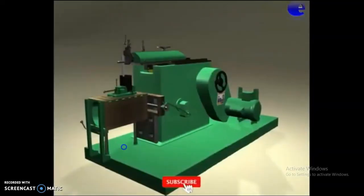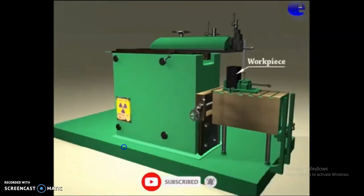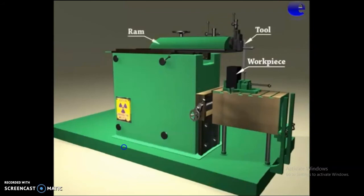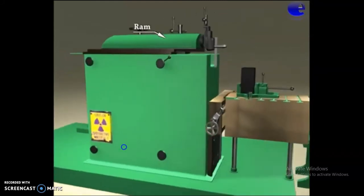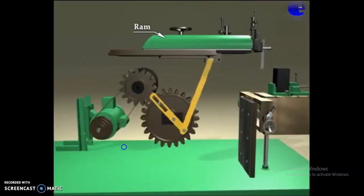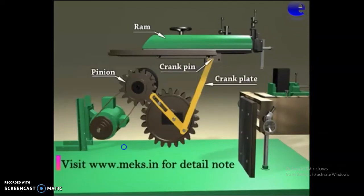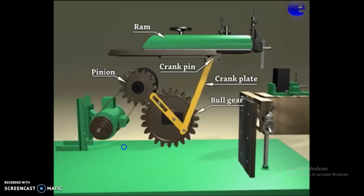The main parts of the mechanism are: workpiece, tool, RAM, base, table, pinion, crank pin, crank plate, bull gear, and connecting rod.